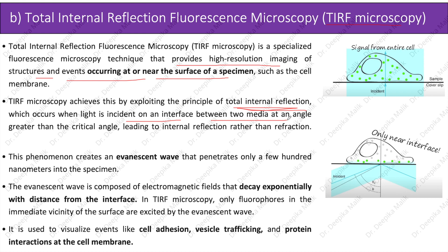Total internal reflection leads to internal reflection rather than refraction. As shown in the diagram, theta-c represents the critical angle; when incident light is given at this critical angle, rays reflect back into the medium and show no refraction. This phenomenon creates an evanescent wave that penetrates only a few hundred nanometers into the specimen.